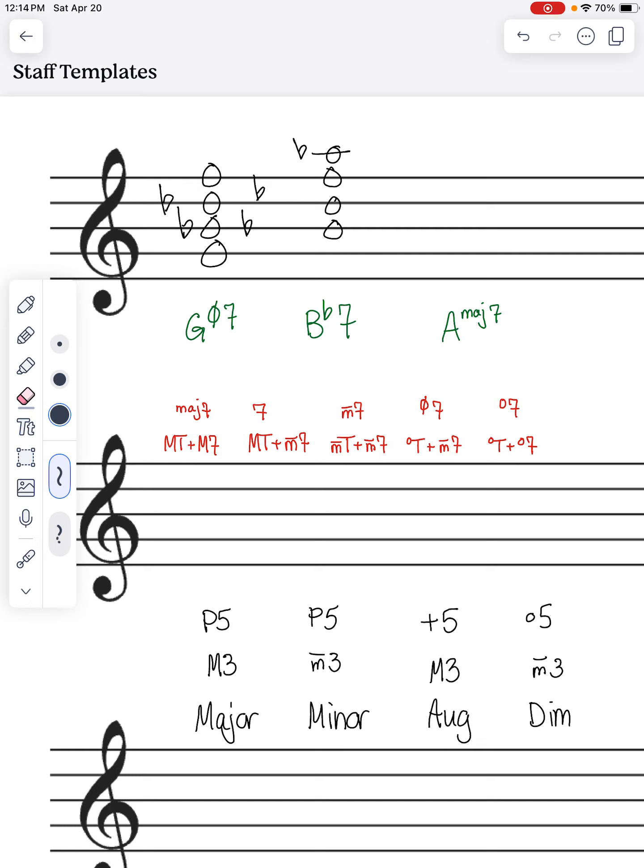Okay, now, if you're somebody who does it based on the scale and not based on the key signature, B-flat, C, D, E-flat, F, G, A, B-flat. Let's see. We've got B-flat, D, F. That's our major triad. But we need a minor 7, so we lower that A to an A-flat, and we're good to go.